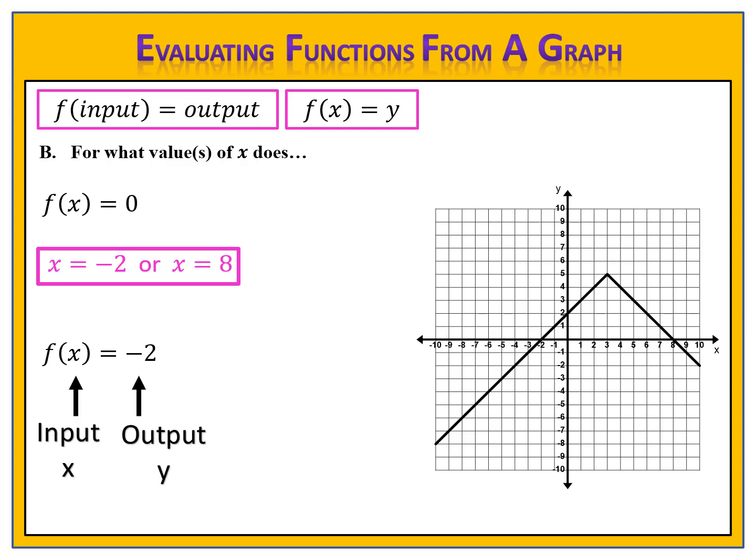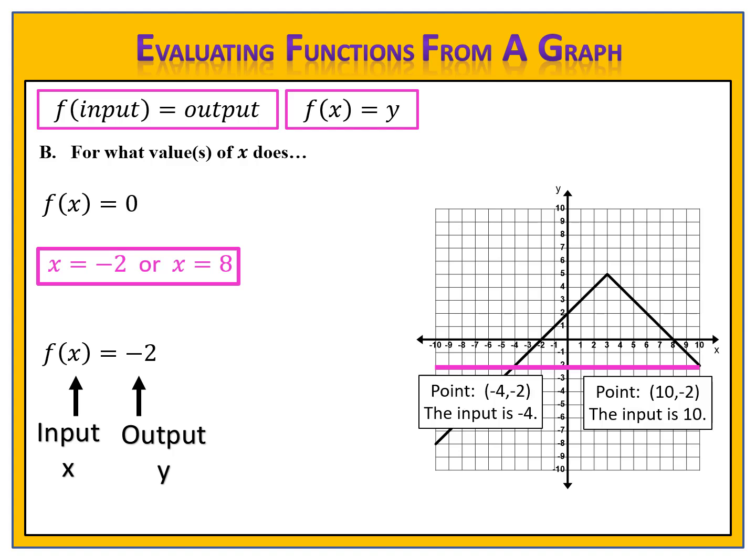For f of x equals negative 2: f of input equals output — we don't know the input but we know the output is negative 2. We draw our line across the graph at negative 2. The graph intersects this line at two separate points: (−4, −2) and (10, −2). The input negative 4 produces an output of negative 2, and the input 10 also has the output negative 2. So x equals negative 4 or x equals 10.